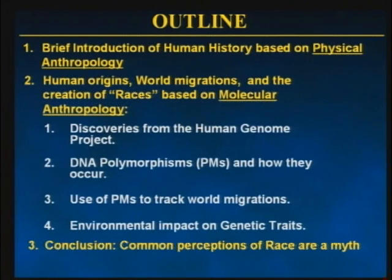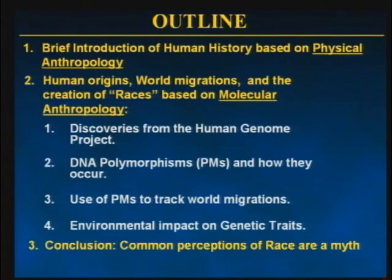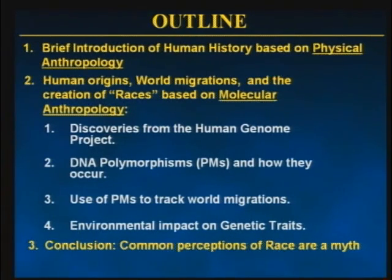Here's a little outline of what we're going to talk about today. We'll talk first about physical anthropology, which has been around for hundreds of years, where scientists, archaeologists, and anthropologists have traveled and picked up bones and dated them. But we'll mostly discuss a new field — molecular anthropology — that arose out of the Human Genome Project. We'll talk about DNA polymorphisms, how they occur, and how they are used to track human origins and migrations, then the environmental impact, and a conclusion.